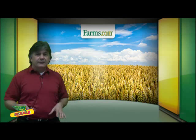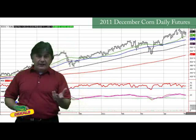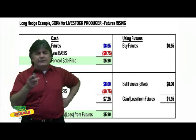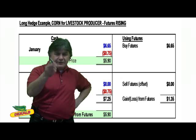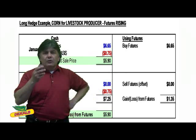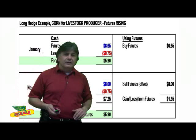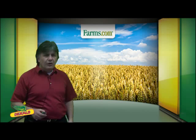Here's a second example — a long hedge for feed — again using the December 2011 corn daily futures chart. Futures are rising, corn is $6.65 today with basis minus $0.75. The futures price goes up, and you can see about $1.35 was left on the table. Subtract that from $7.25 to get to $5.90. In this case, the pork packer or hog producer was able to lock in corn at $5.90. The futures offset a rising cost later. If futures fall, the opposite happens — a difference of $2.85 — subtract that from the November cost to get back to $5.90 per bushel.